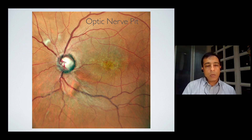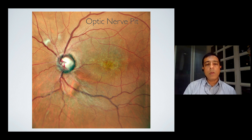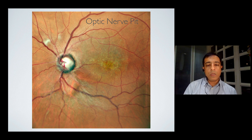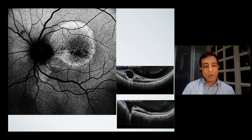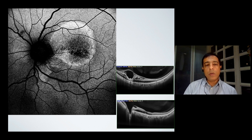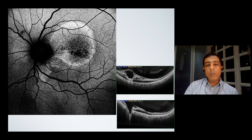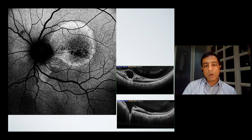This is an optic nerve pit. You see the classic hue of the detachment extending from the disc towards the macula. It is seen much better using autofluorescence — you can see the extent of the serous fluid. Also the OCT is fantastic. You get a long scan; you can take the disc along with the whole extent of the macula and see how this lesion extends from the disc towards the macular area, how the fluid collects, and where the schisis changes are. In every way, when you use multimodal imaging with these kinds of entities, it always gives you more information and a better idea of the extent of the condition.